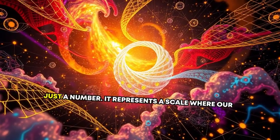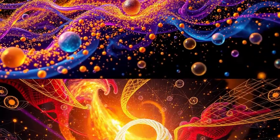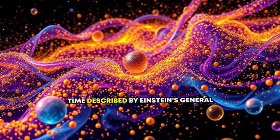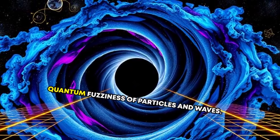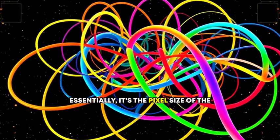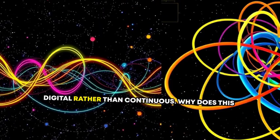It's not just a number. It represents a scale where our current understanding of physics breaks down. At this minuscule frontier, the smooth space-time described by Einstein's general relativity collides violently with the quantum fuzziness of particles and waves. Essentially, it's the pixel size of the universe, assuming space-time itself is digital rather than continuous.